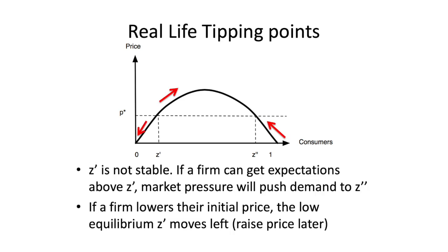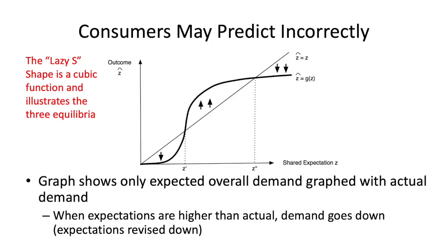The book makes a big point about tipping points. You want to be above the tipping point, pushing it up, because there's definitely pressure down towards zero. If you can get above that first tipping point, you have pressure all the way up to the middle equilibrium. You just have to convince people to do it. The shared expectation — what the book calls the expectations equilibrium — is key. This is essentially the S-function, which again reflects the cubic function idea.